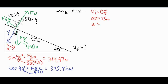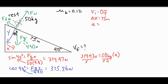The only part we're concerned about for the first part of the problem is the x-component, because that is the force causing the skier to slide down the ramp. Taking that x-component of 314.97 newtons and setting it equal to ma using Newton's second law, with mass of 50 kilograms, we divide both sides by 50 and get an acceleration of about 6.30 meters per second squared.